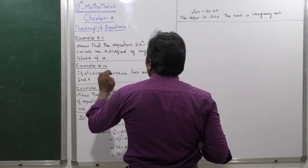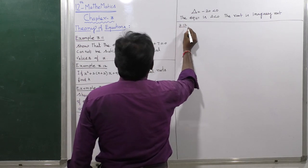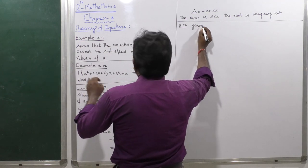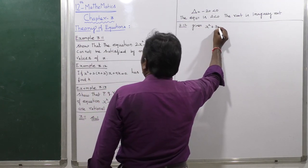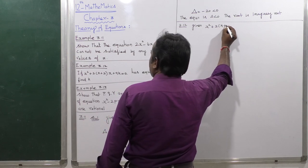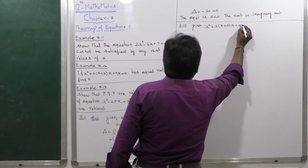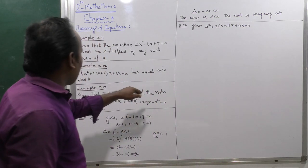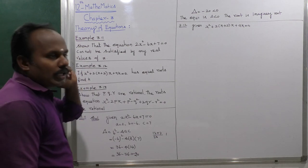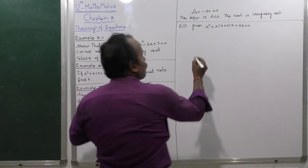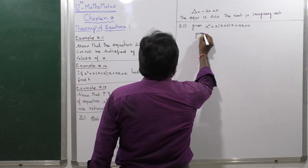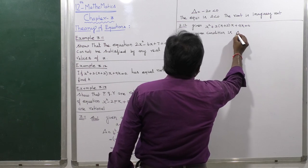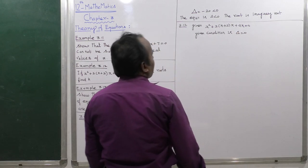Next, Example 3.12. The given equation is x squared plus 2 into (k plus 2) into x plus 9k equals 0, where the roots are equal. We need to find the value of k. Since the roots are equal, the given condition is delta equals 0.